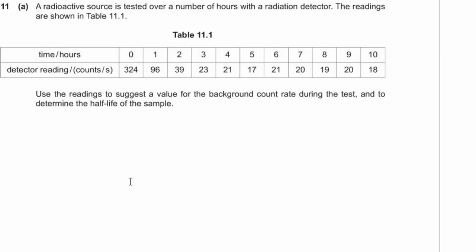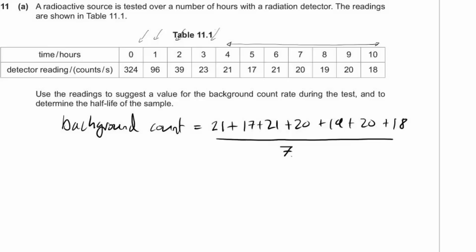Question eleven: a radioactive source is tested over several hours. Looking at the readings from 4 to 10 hours, values appear stable within experimental error — these likely represent background radiation. Calculate the average background count rate from those readings to get a representative value of approximately 19 counts per unit time.